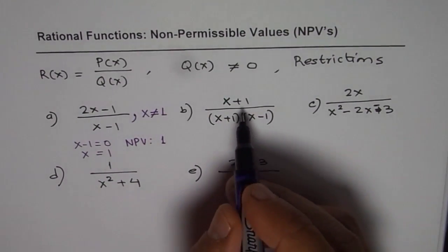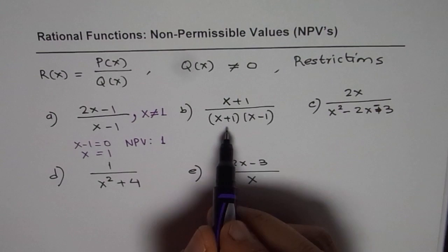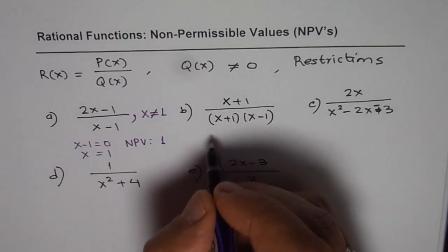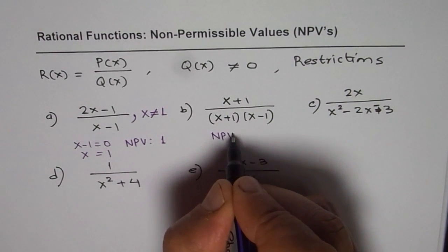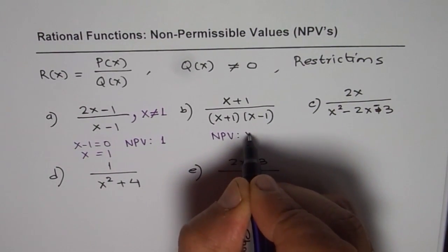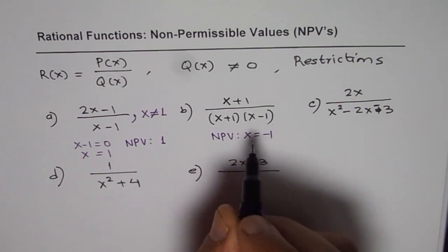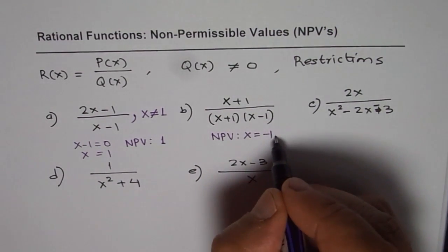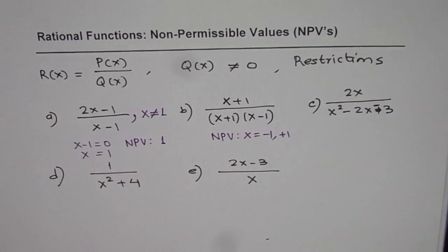Next one. Here x plus 1 can be 0 for minus 1. So here the non-permitted value is x equals minus 1, and this one will be 0 for x equals plus 1. So we have two values here.